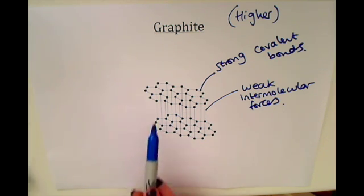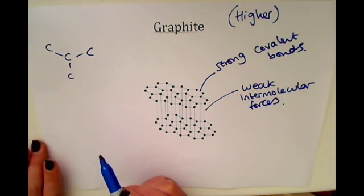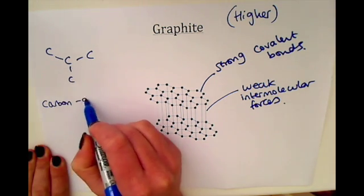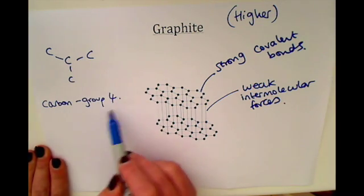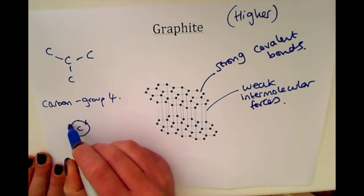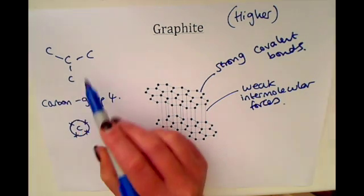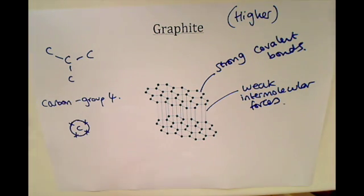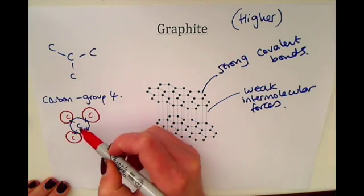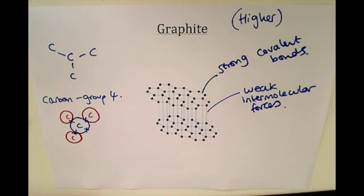Also notice that carbon is bonded to three other carbons in graphite, yet carbon is in group four of the periodic table. The group number tells you how many electrons are in the outer shell, so carbon has four electrons in its outer shell. If it is covalently bonded to three other carbons, it is sharing three of its electrons with those three carbon atoms.